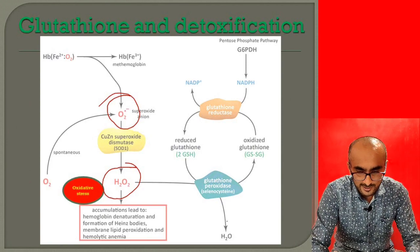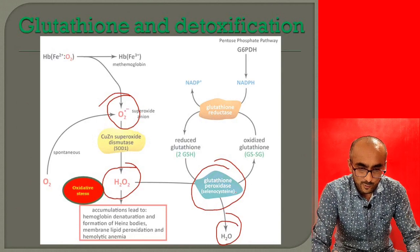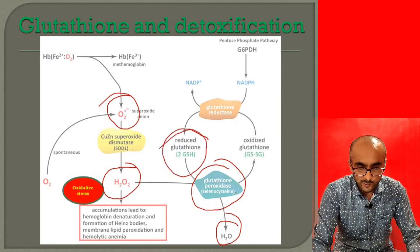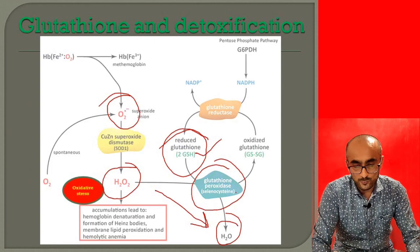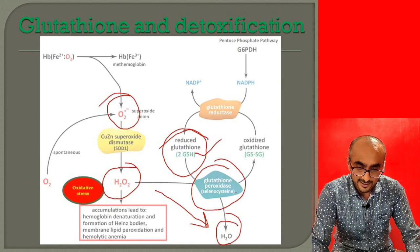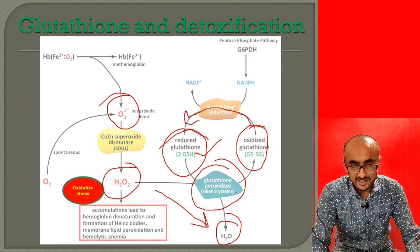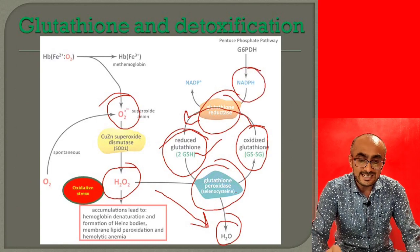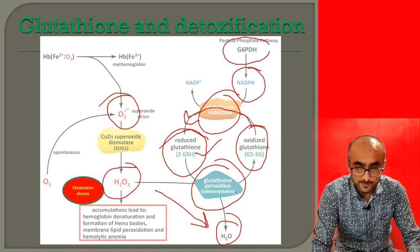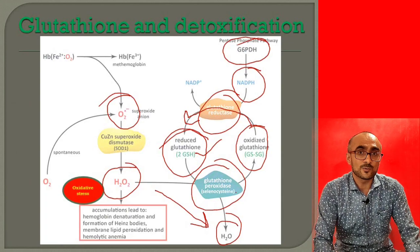In a normal situation, H2O2 is converted into water by glutathione peroxidase — a selenium-containing enzyme — which uses two molecules of reduced glutathione to catalyze this reaction. Reduced glutathione is produced by glutathione reductase, which converts oxidized glutathione back to the reduced form using NADPH. That NADPH comes from the pentose phosphate pathway through oxidation of glucose-6-phosphate by glucose-6-phosphate dehydrogenase.